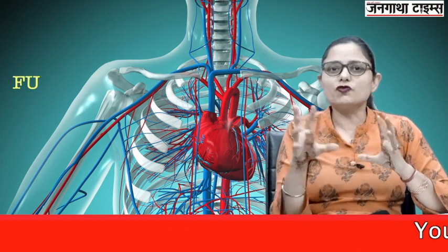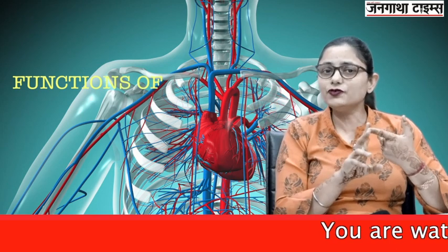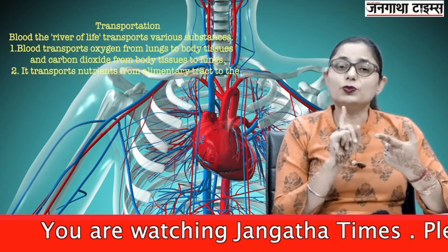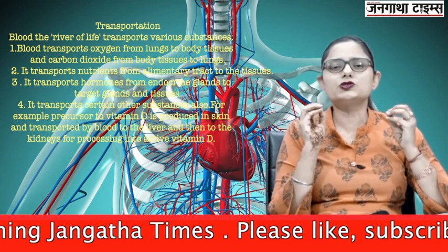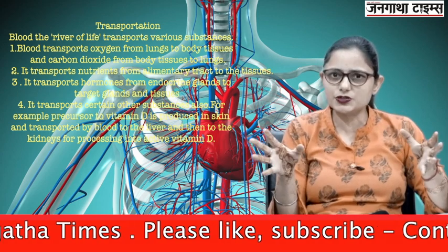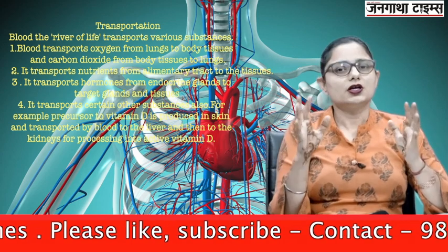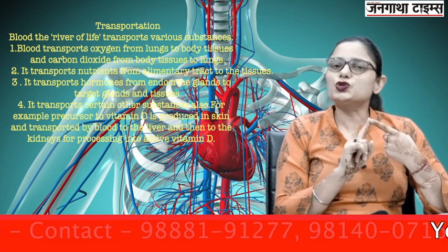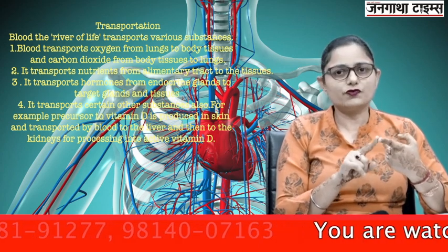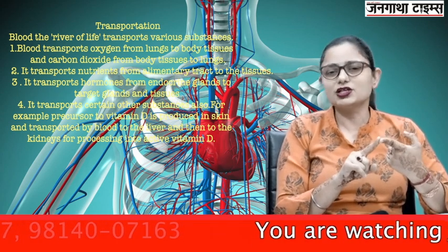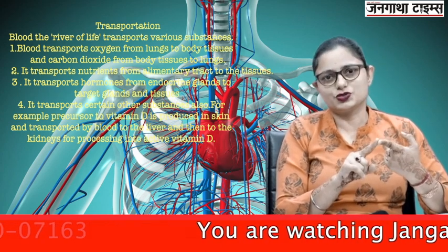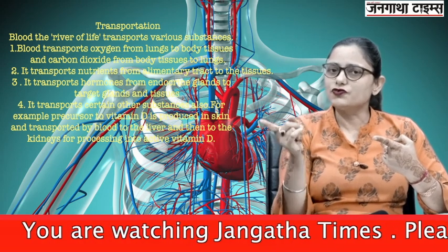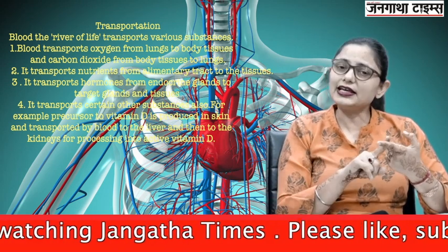Now, the functions of blood. The main function of blood is transportation — blood is called the river of life. First, it transports oxygen from the lungs to various tissues, and transports carbon dioxide from various tissues to the lungs.